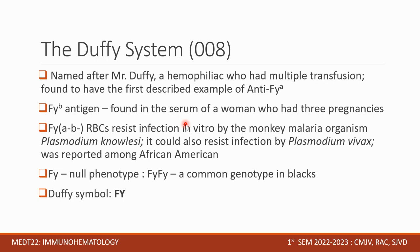Anti-FYB was found in the serum of a woman who had three pregnancies. FYA-negative and FYB-negative RBCs resist infection in vitro by the monkey malaria organism Plasmodium knowlesi, and could also resist infection by Plasmodium vivax — this was reported among African Americans. People without Duffy antigens are known to have resistance to Plasmodium knowlesi and Plasmodium vivax.